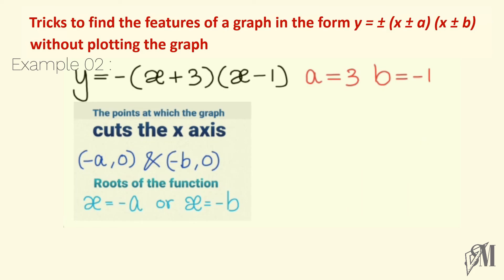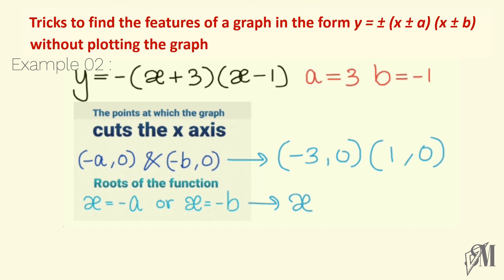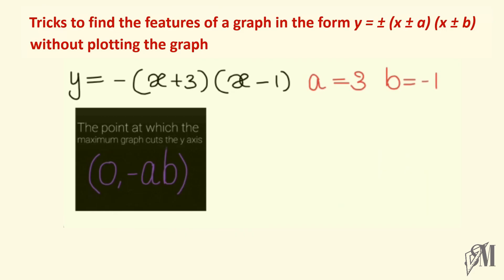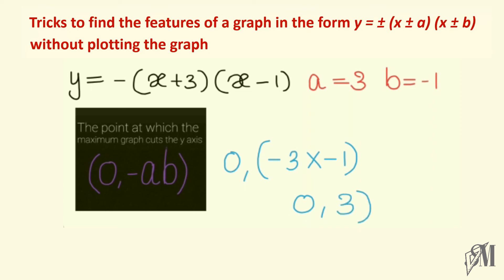The points at which the graph cuts the x-axis: minus a gives (minus 3, 0), and minus b gives (1, 0). The roots of the function are x equals minus 3 and x equals 1. The point at which the maximum graph cuts the y-axis is given by (0, minus a times b). Here minus 3 times minus 1 is 3, so the y-intercept is (0, 3).